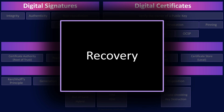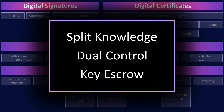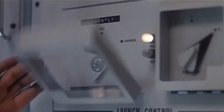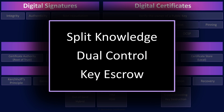Sometimes we may need to recover a lost key, and there are a few different ways. Split knowledge: split the knowledge of the key up amongst two or more people — in order to recover the key, these folks need to get together and combine each of their bits of knowledge to recover the complete key. Dual control: two or more people need to perform some action to recover the key — similar to how two people have to turn their own keys simultaneously to launch a nuclear missile. Key escrow: a copy of the encryption key is stored with a trusted third party, and if you need to recover the key, you ask that trusted third party for a copy.